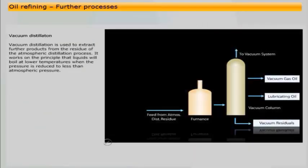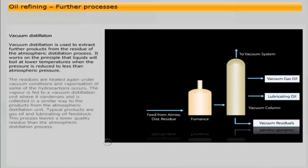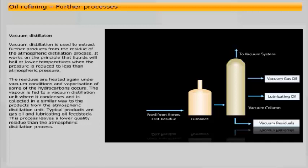Vacuum distillation is used to extract further products from the residue of the atmospheric distillation process. It works on the principle that liquids will boil at lower temperatures when the pressure is reduced to less than atmospheric pressure. The residues are heated again under vacuum conditions and vaporisation of some of the hydrocarbons occurs. The vapour is fed to a vacuum distillation unit where it condenses and is collected in a similar way to the products from the atmospheric distillation unit. Typical products are gas oil and lubricating oil feedstock. This process leaves a lower quality residue than the atmospheric distillation process.